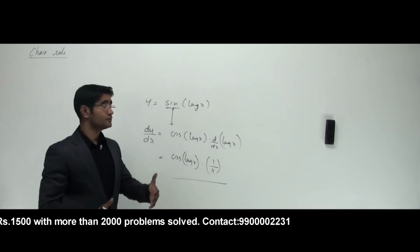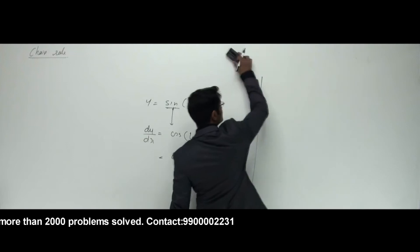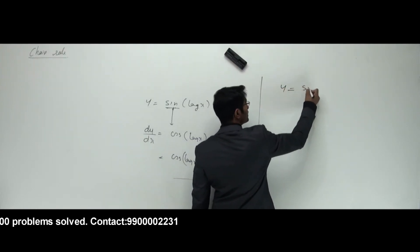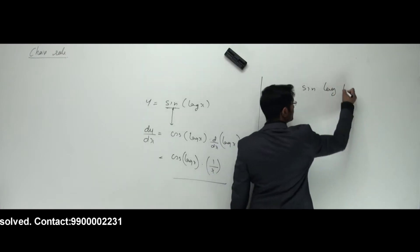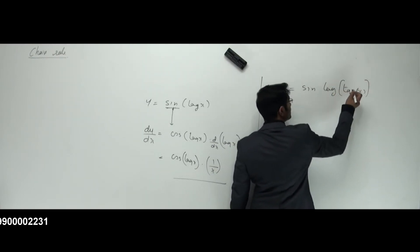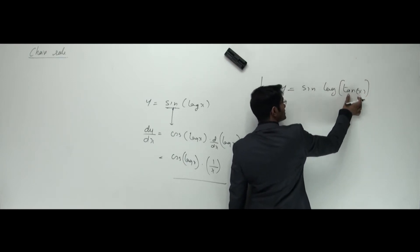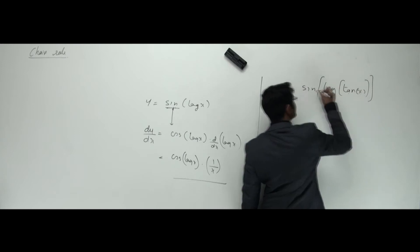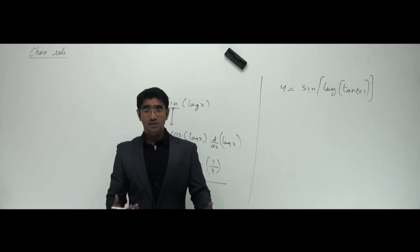Now what if we have more chains? If y = sin(log(tan x)), we can see that x is inside tan, the whole tan x is inside log, and log of tan x is inside sine. So there are three chains here. How do we work with these kinds of problems?